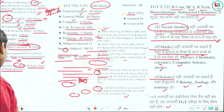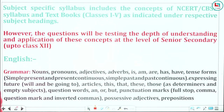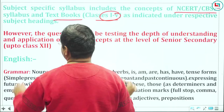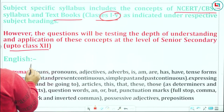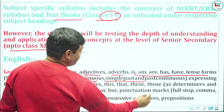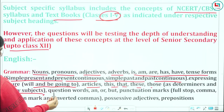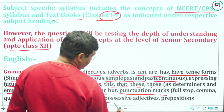After seeing the total, let's move to the next line. Subject specific syllabus includes the concepts of NCERT. The main focus is NCERT CBSE syllabus and textbooks Class 1 to 5 — this is basically for PRT. However, the questions will be testing the depth of understanding and application of concepts up to senior secondary Class 12. Grammar includes nouns, pronouns, adjectives, adverbs, is/am/are/has/have/had, tenses, articles, determiners, question words, punctuation marks, possessive adjectives, and prepositions.